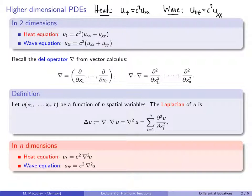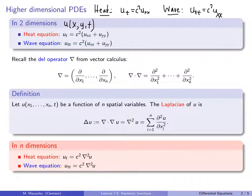Here u is a function of time and position x. Now let's suppose that u is a function of three variables: position x, position y, and t. So now our spatial domain is two-dimensional.